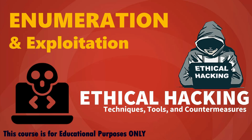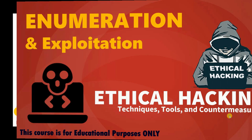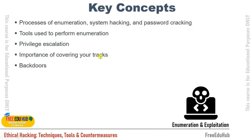At this stage the hacker relies on information already collected and tries to penetrate actual systems. This chapter will explain the processes of enumeration, system hacking, and password cracking. We'll cover tools used to perform enumeration, privilege escalation, the importance of covering your tracks — deleting logs before leaving the system — and what backdoors are.